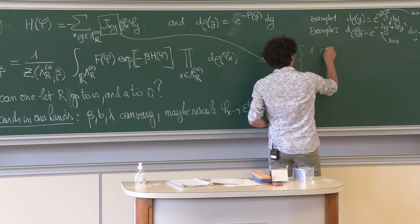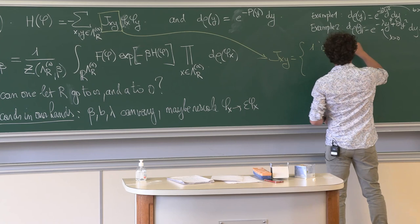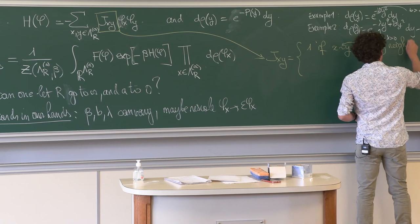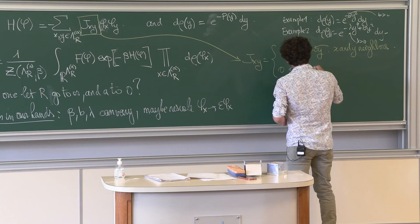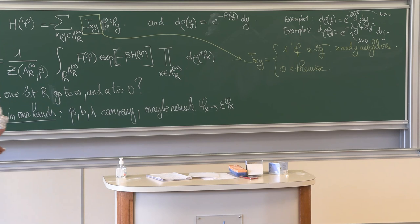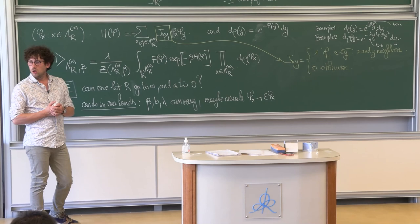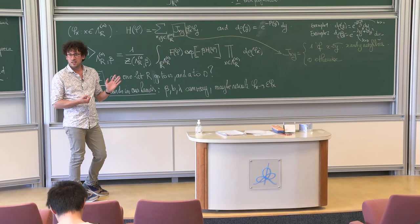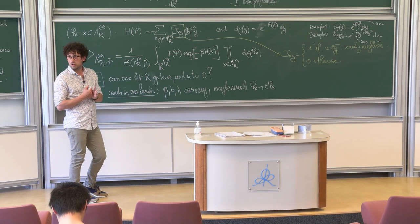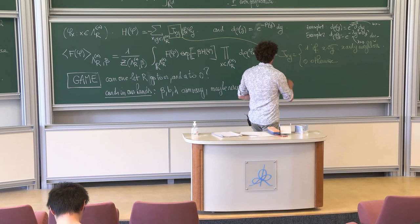We set J_{xy} = 1 if x and y are nearest neighbors, and 0 otherwise. One could also take more complicated finite-range interactions, or polynomially decaying J_{xy} — which is actually more relevant. In our story, the nearest-neighbor case J_{xy} = 1 is the hardest one, and we stick with it since it is already sufficiently interesting.